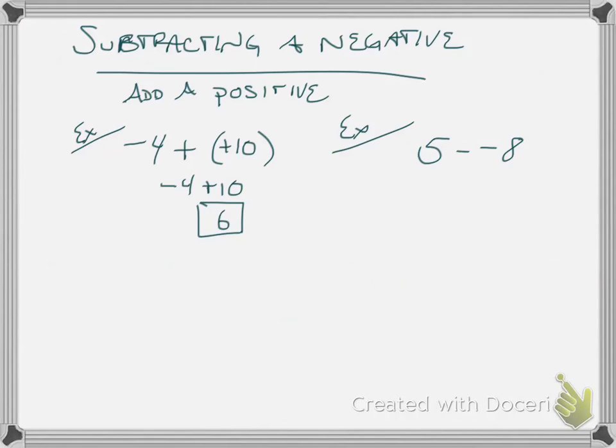One more quick one. 5 minus negative 8, well that becomes plus a positive 8. So positive 5, positive 8, same sign, they're both positive. Add the numbers, which becomes 13. Keep the sign the same, positive 13.